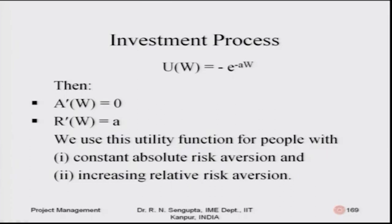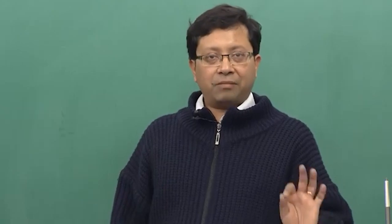Let us go to the third example, which is the exponential utility function. For this function, if you find out a prime and r prime, they come out to be zero and a respectively. If a prime is zero, we immediately know it has a constant absolute risk aversion property. If r prime equals a, and a is a positive constant parameter for the utility function, it has an increasing relative risk aversion property.